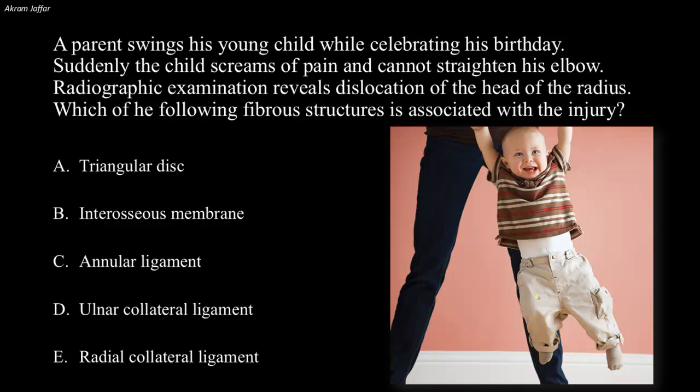A sudden pull of the arm of a child may subluxate or partially dislocate the radial head. This is called pulled elbow or nursemaid's elbow.